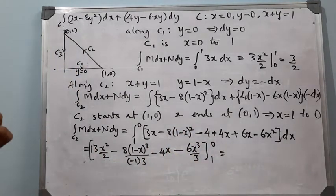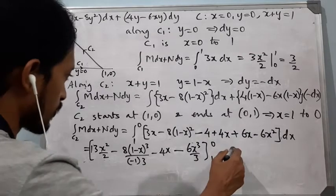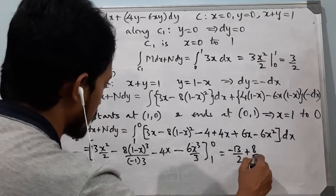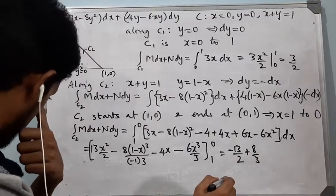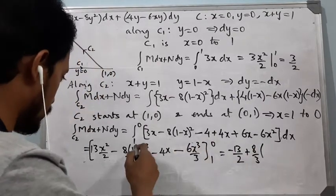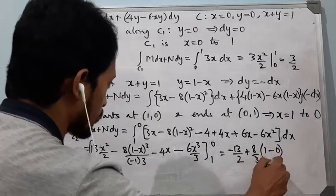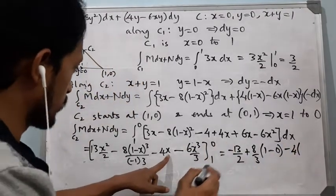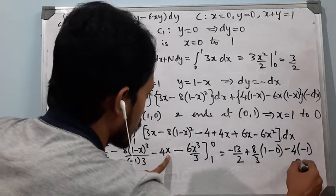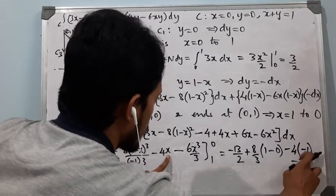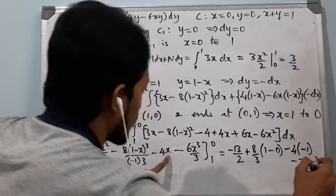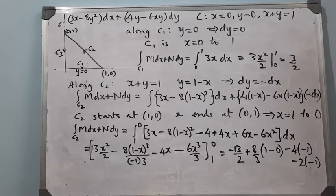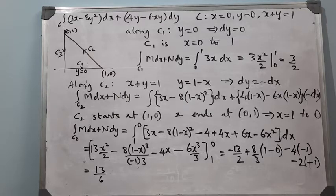Substituting the limits (upper limit first): when x = 0 we get certain terms, when x = 1 we get others. After evaluation, simplifying gives the result 13/6 for the integral along C2.